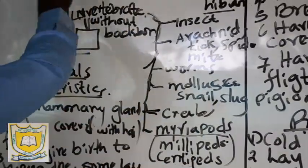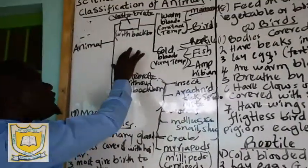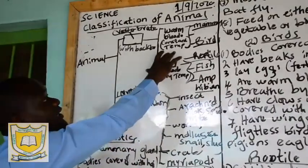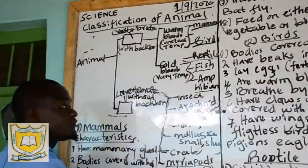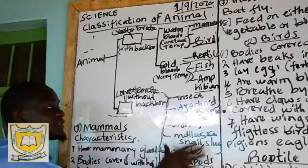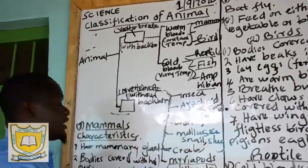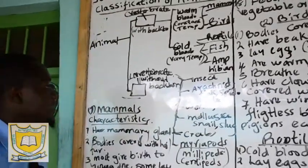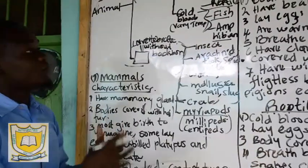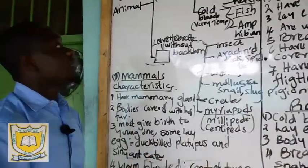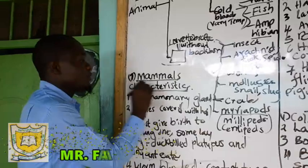You must understand all the classification of animals: vertebrates, invertebrates, warm-blooded, cold-blooded, and the examples. You also need to understand insects, arachnids, worms, mollusks, grubs, and myriapods. Now we are going to discuss the characteristics of each group, starting with mammals.